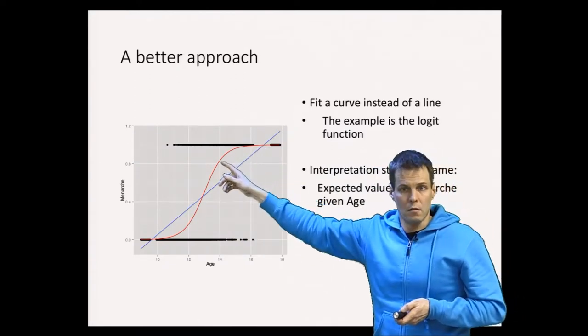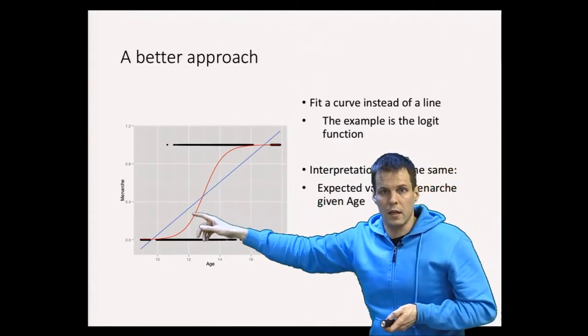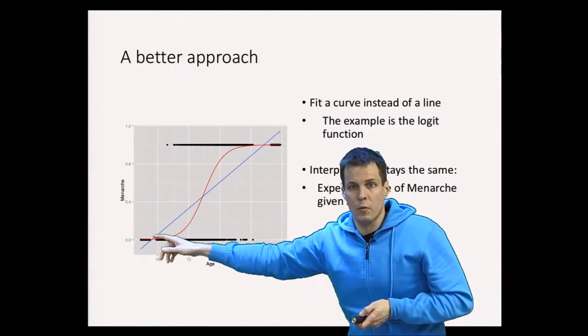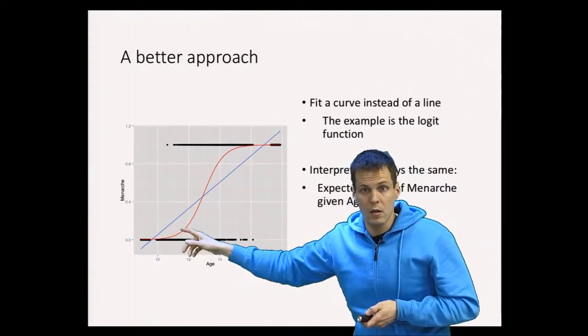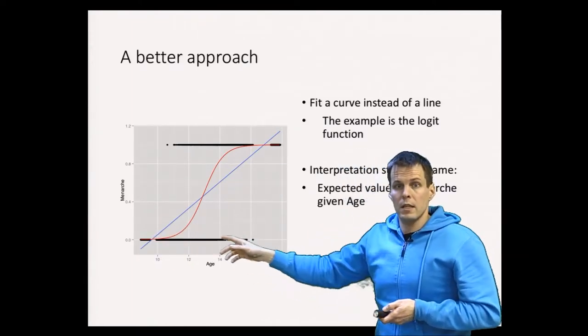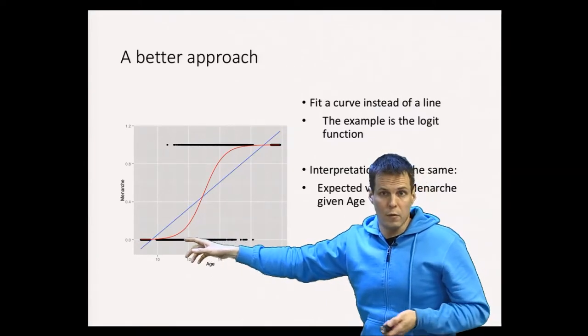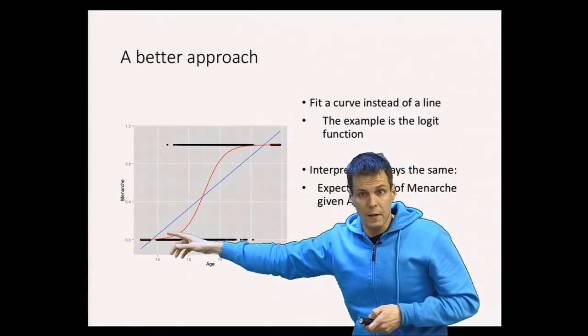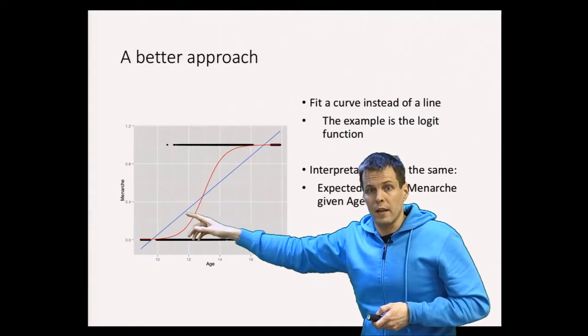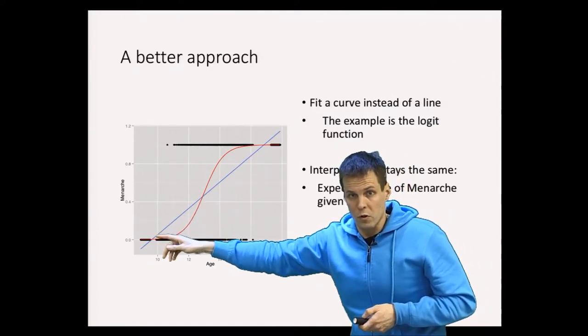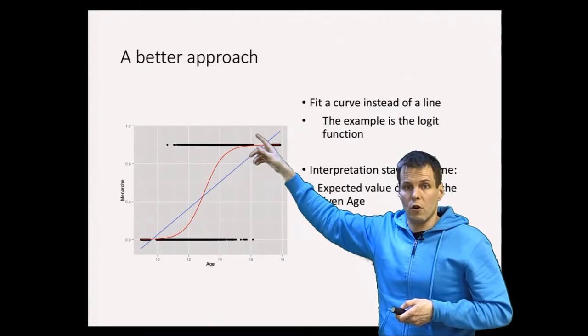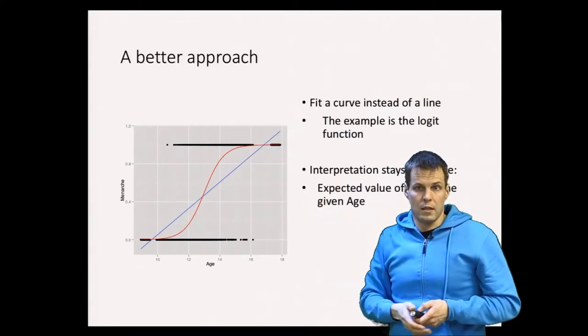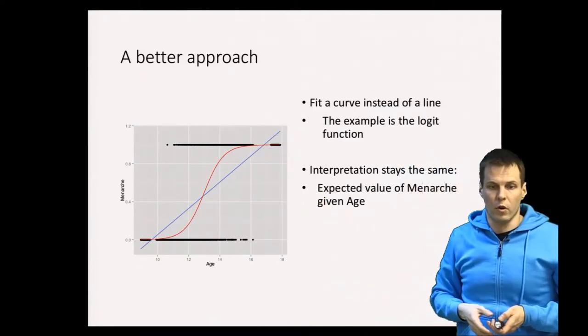And the interpretation of the result stays the same. So the line gives us the expected probability of a girl having had menarche given their age. But this line is a much better fit for the data. The relationship is not linear; rather it follows an S-shape, and the logistic curve is one such S-shape curve that we could use and it's very commonly used.